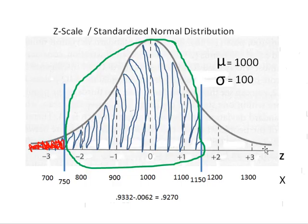Now we subtract the probability of getting less than 750 from the probability of getting less than 1,150. What's left, which is 0.9270, is what's in between the two lines. That's really all there is to it.